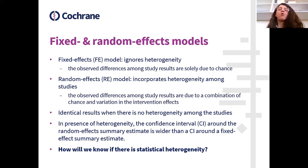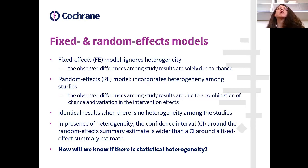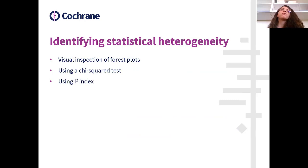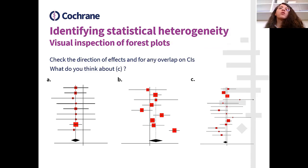Before doing any analysis, the basic question is: how will we know if there is statistical heterogeneity, and can we assess its magnitude? We refer specifically to statistical heterogeneity, because clinical and methodological variability can be assessed by checking individual study characteristics. Some ways proposed to identify statistical heterogeneity are: visual inspection of forest plots, the chi-square test, and the I-square index.